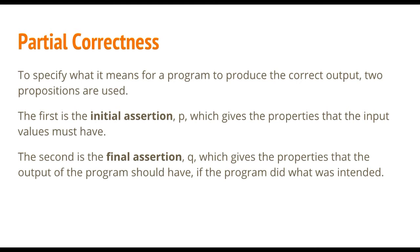Partial correctness specifies what it means for a program to produce the correct output. You have first the initial assertion P, which gives the properties of input values, and second the final assertion Q, which gives the properties that the output of the program should have.